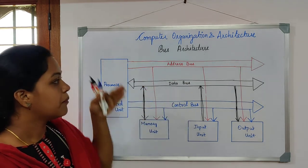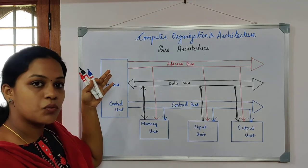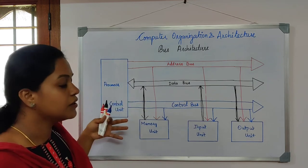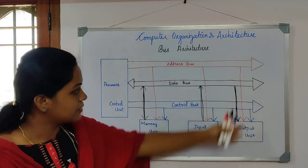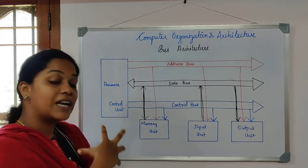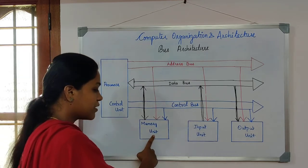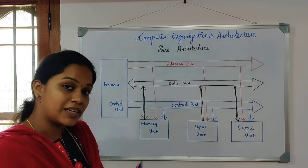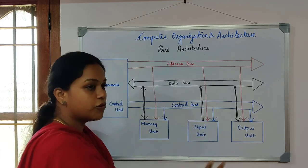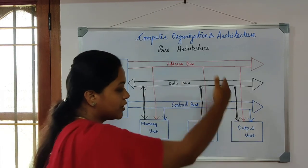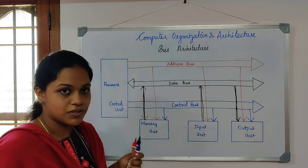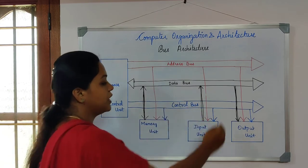To summarize: address bus is unidirectional — the processor is the one who has the address of the main memory from where instructions and data are fetched. Data bus is bidirectional with respect to memory, since data can be fetched from and returned to memory. With respect to the input unit, data flows in from the input unit; with respect to the output unit, data flows out for display. Control bus is unidirectional, as the control unit in the processor generates and sends control signals to every component.